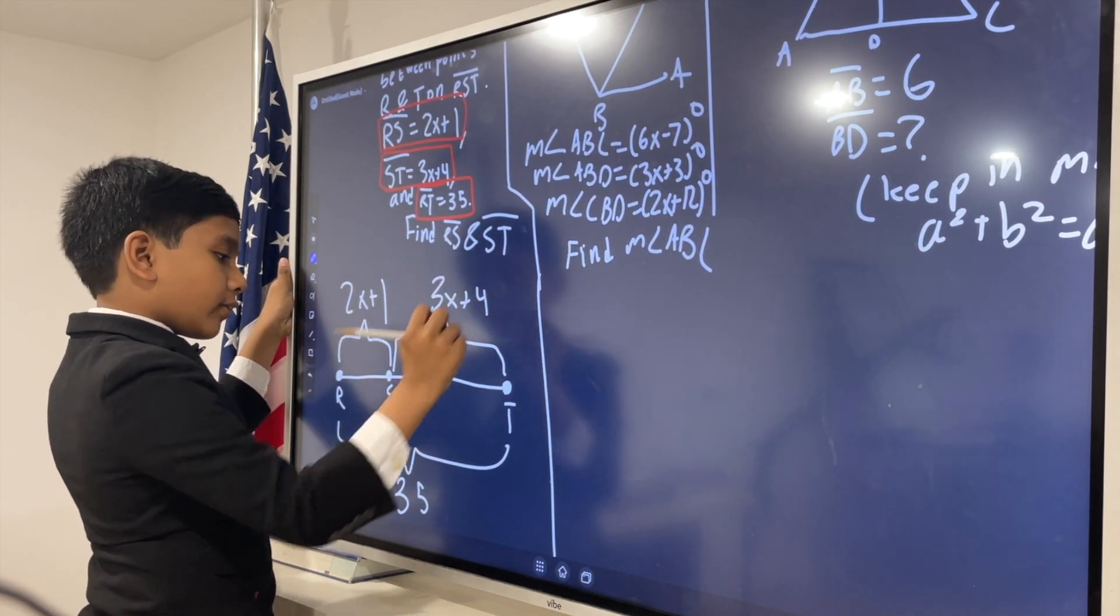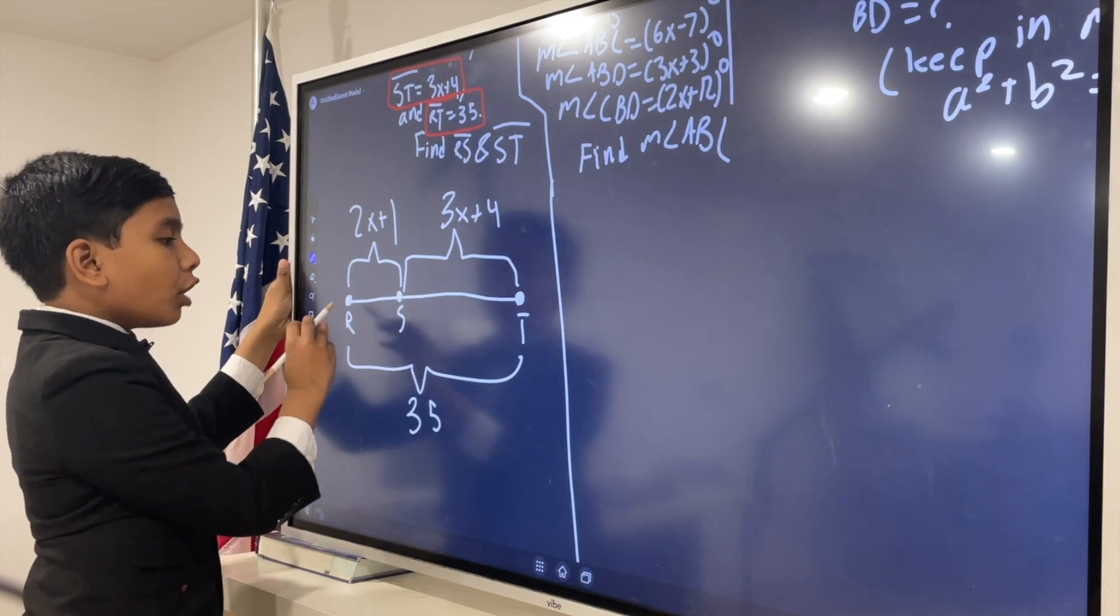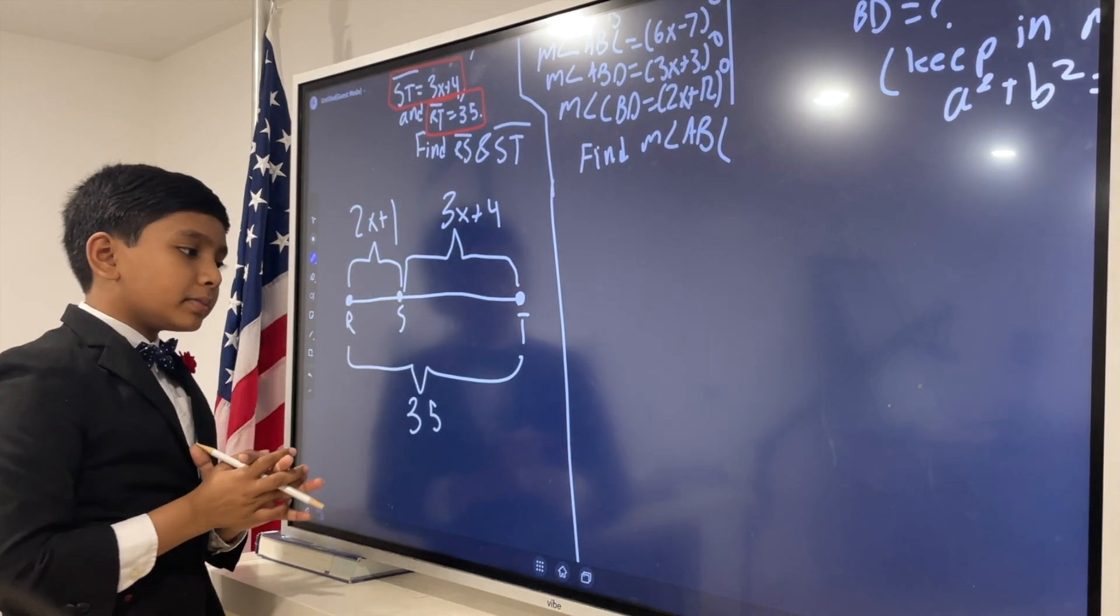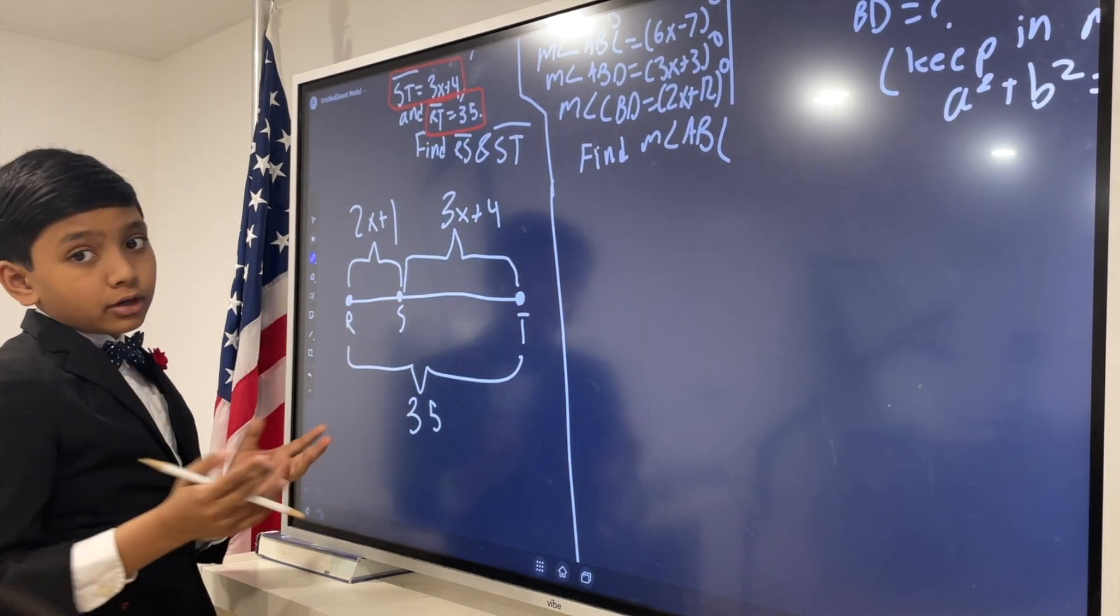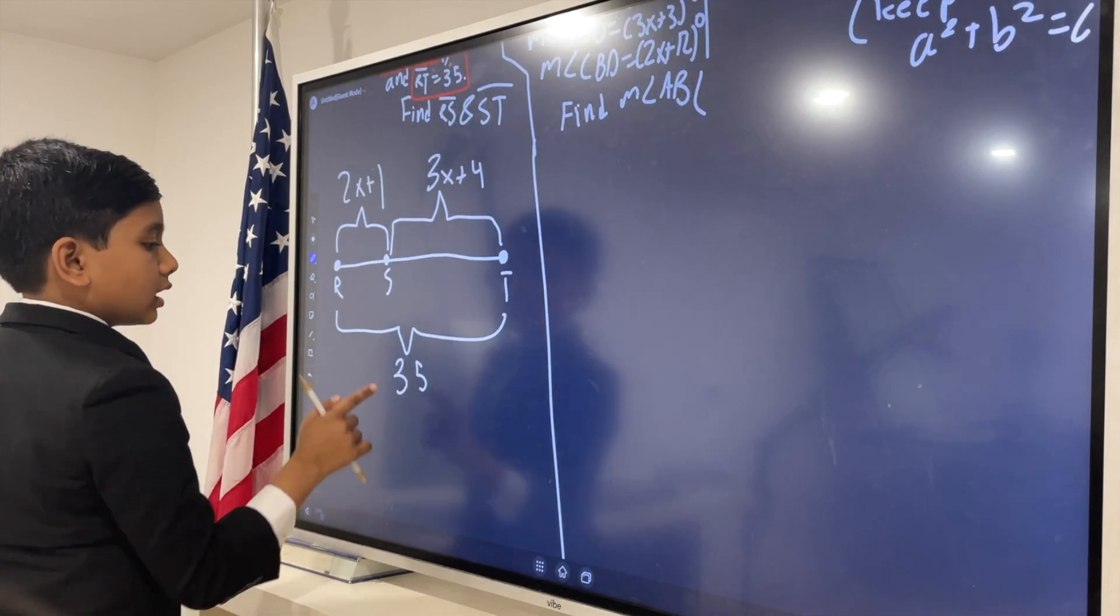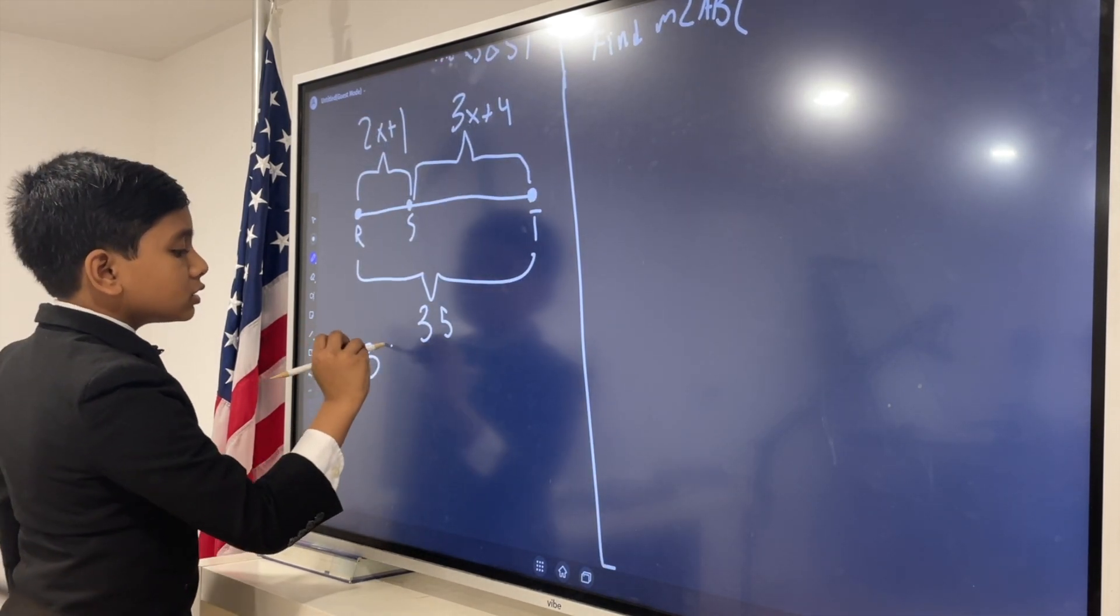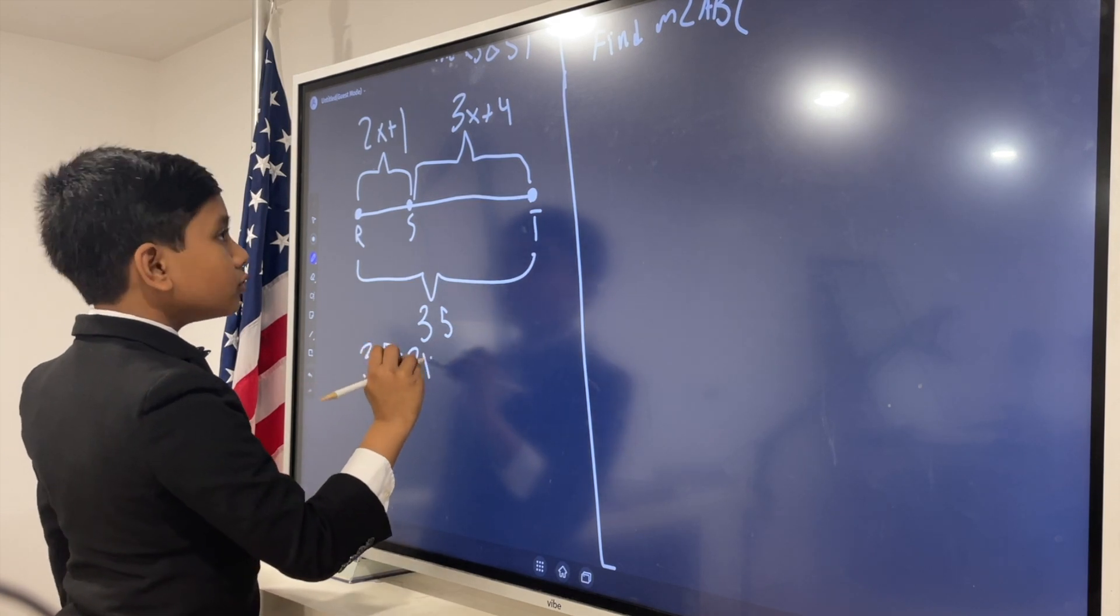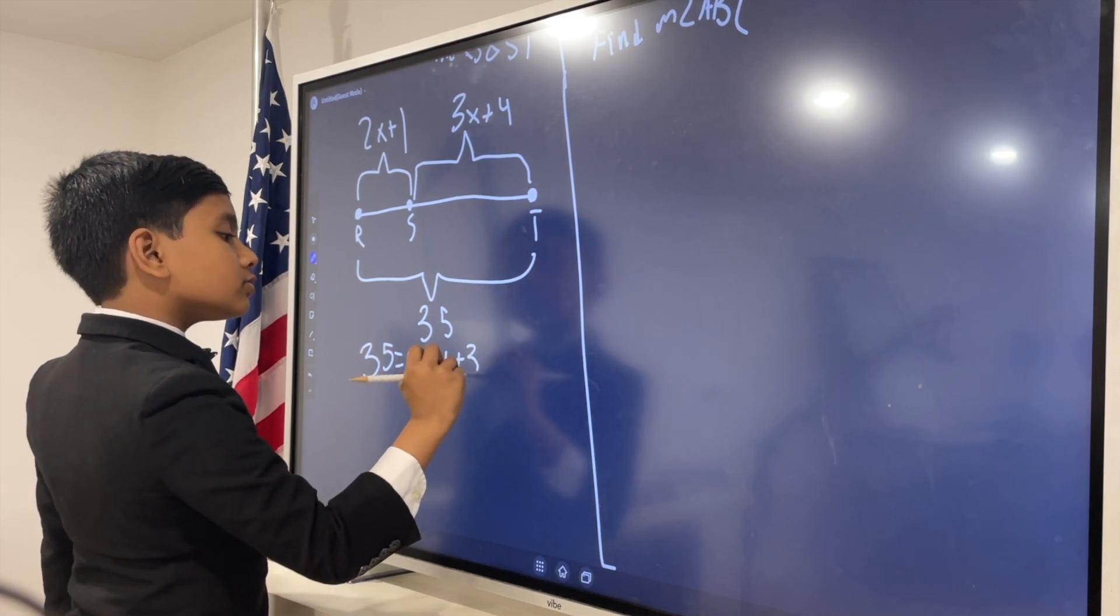So, this is 3x plus 4. RS and ST together make up the entirety of the line. But, what also makes up the entirety of the line? 35. So, 35 is equal to 2x plus 1 plus 3x plus 4.